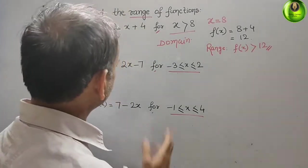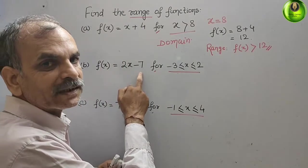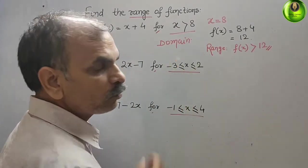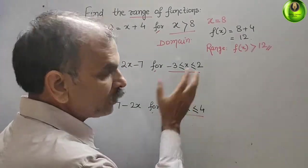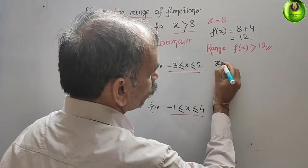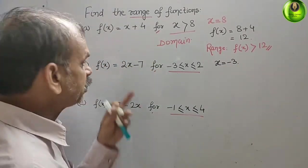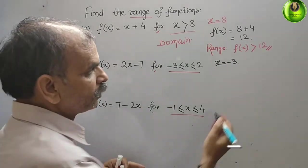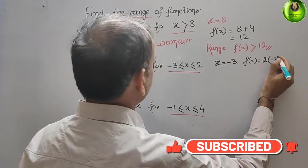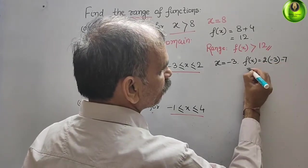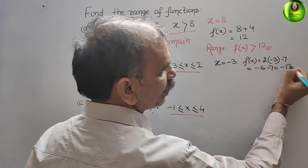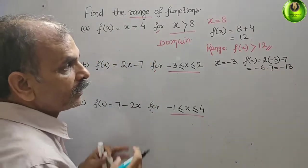Now comes the second question. They have given f(x) = 2x - 7 for -3 ≤ x ≤ 12. This is your domain. First we will take x = -3. So f(x) = 2(-3) - 7, which equals -6 - 7, that is equal to -13.